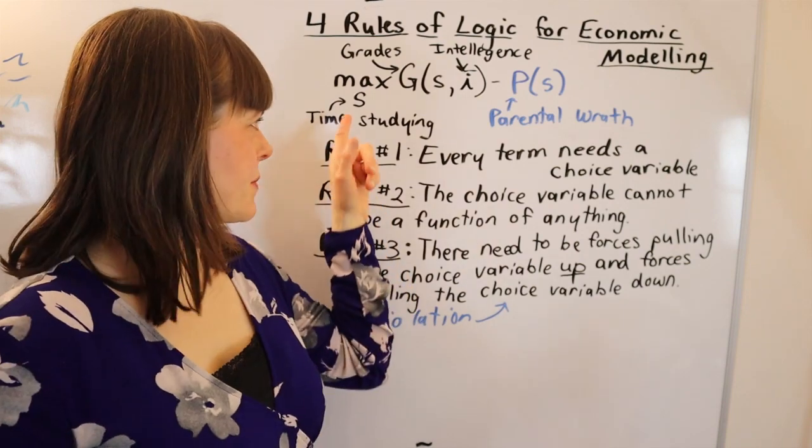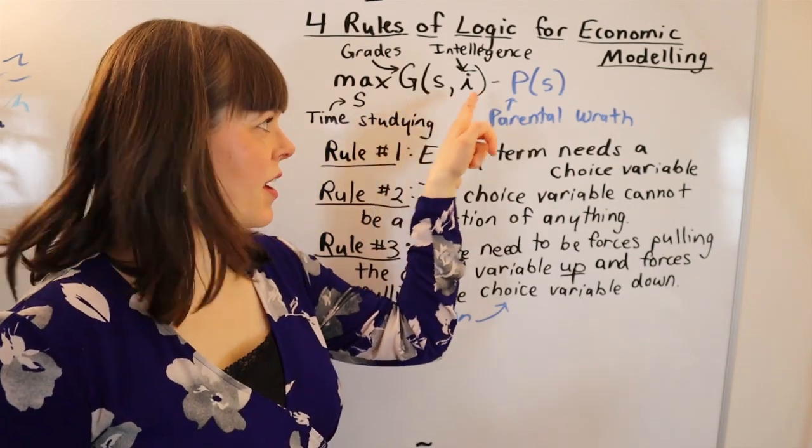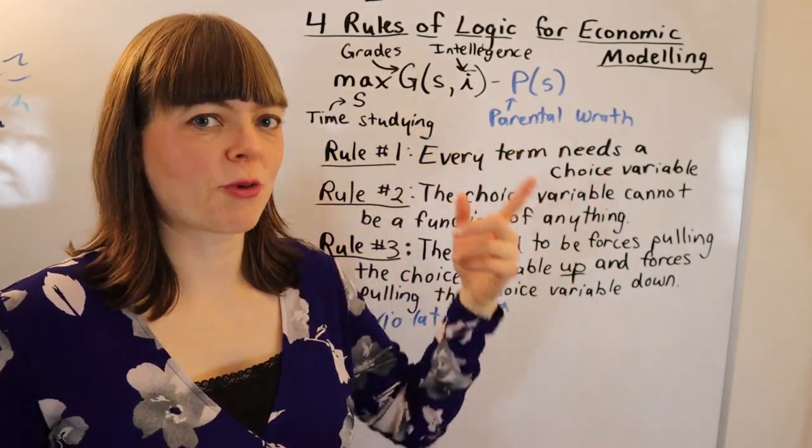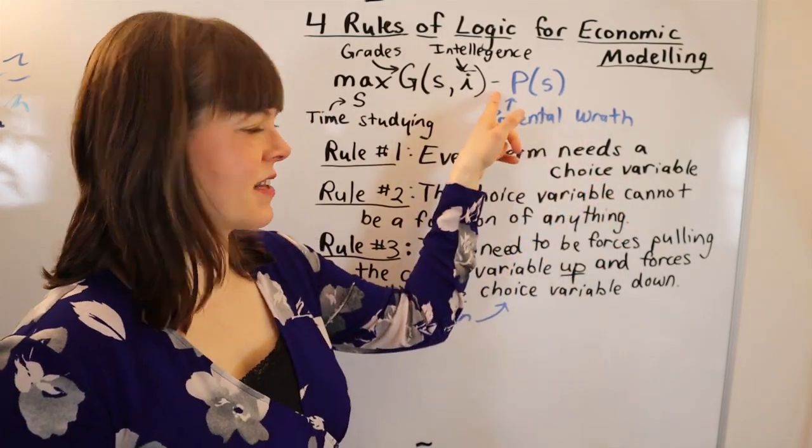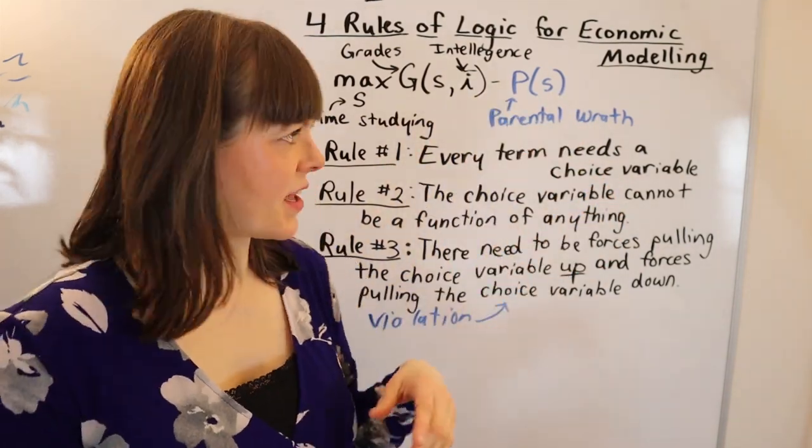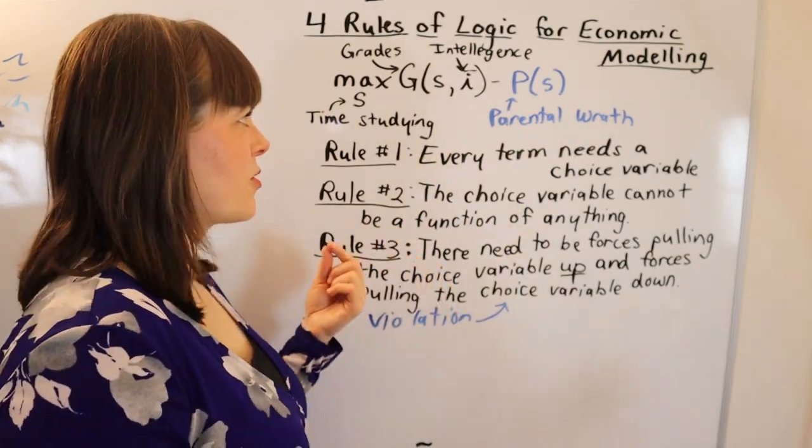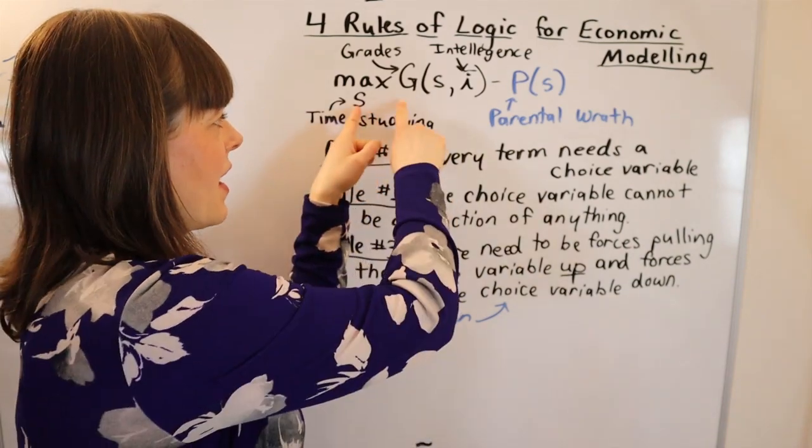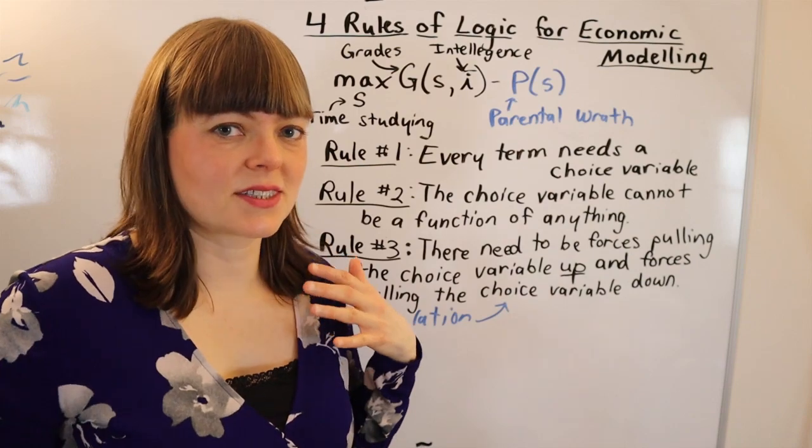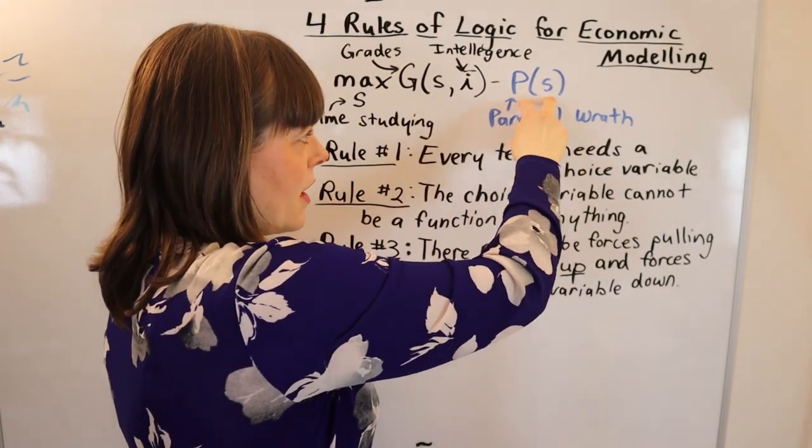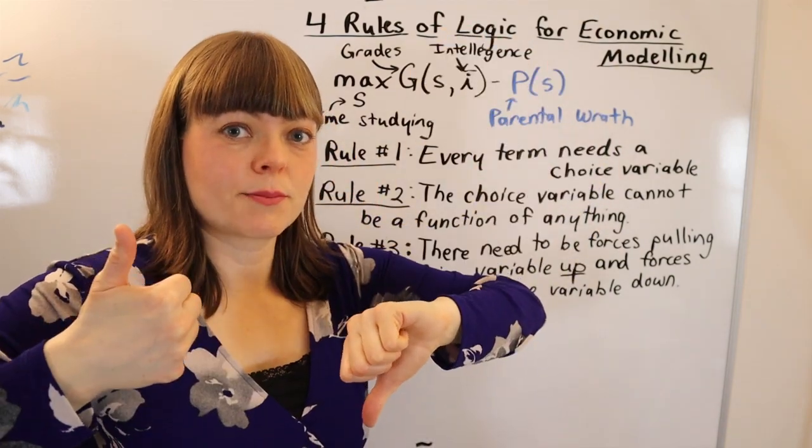Let me show you a violation of this. Here I've set up a model of time spent studying where our objective function is we're maximizing grades minus parental wrath. We might think this is a cost because it has a negative sign, and it should have a negative sign since it is bad. But when we actually think through the logic here, we realize that studying more increases our grades, so this force is pulling time spent studying up.